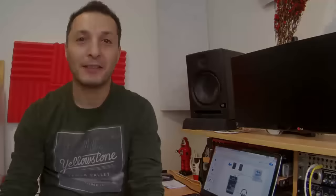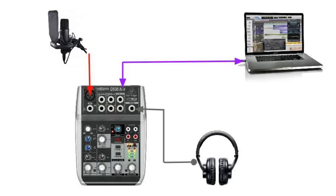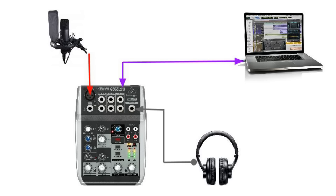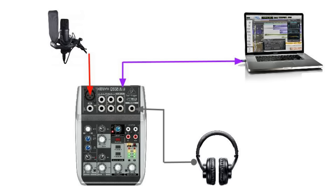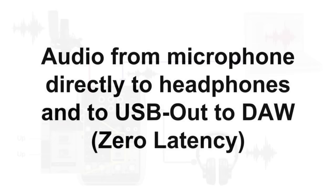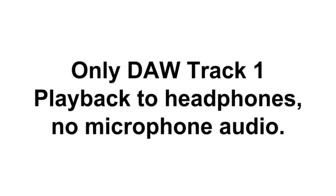Here is a typical audio recording setup with either a microphone or a musical instrument. The audio is directed to the headphones as well as to the laptop or PC via the USB connection, where the mixer has built-in internal analog-to-digital conversion. With the routing position as shown, with both two phones and two main mix in the up position, the audio from the microphone is directly sent to the headphones as well as to the laptop or PC via the USB connection, giving zero latency audio from the microphone to the headphones.